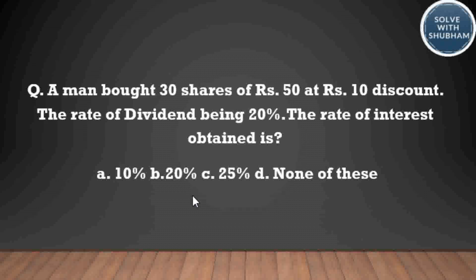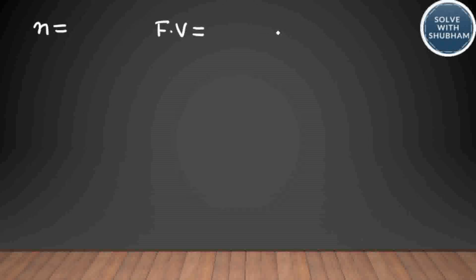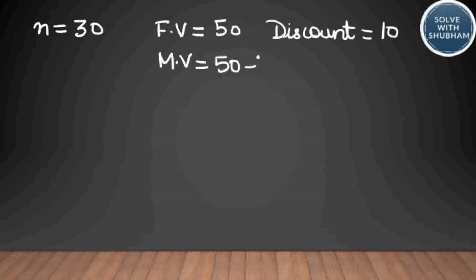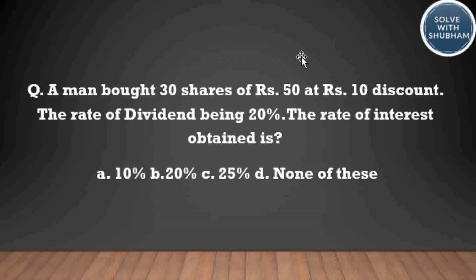Next question: A man bought 30 shares of rupees 50 at rupees 10 discount. The rate of dividend being 20 percent, what is the rate of interest obtained? Number of shares is 30, face value is 50, and discount is 10 rupees so market value is 50 minus 10 equals 40 rupees.